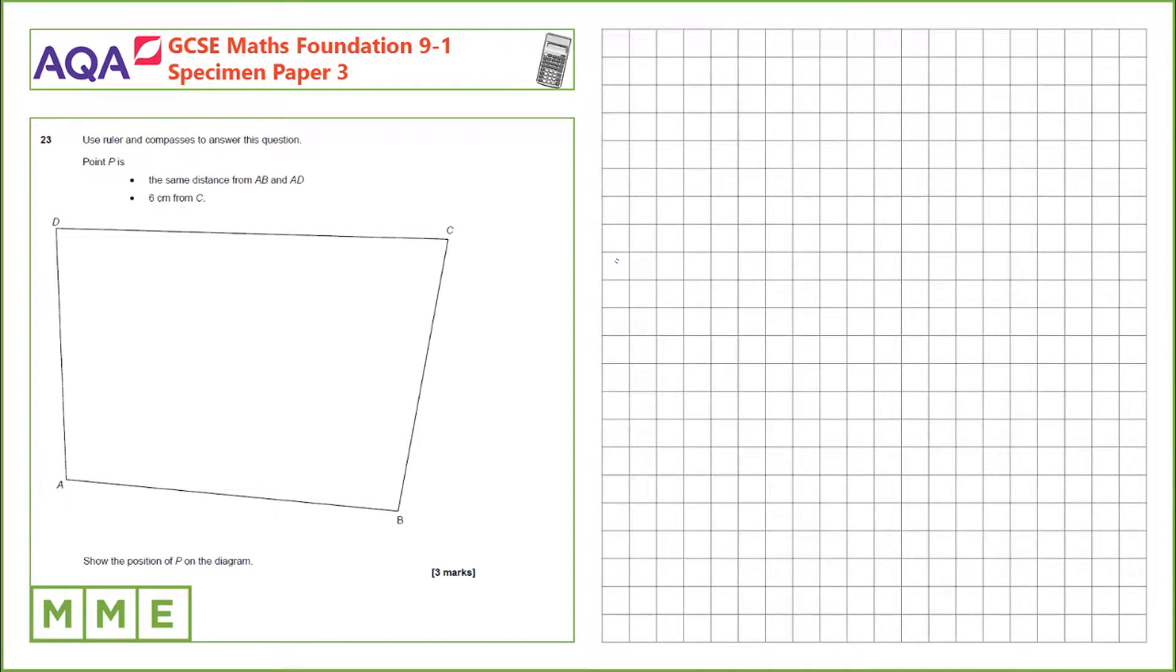Question 23. Use ruler and compasses to answer this question. Point P is the same distance from AB and AD and it's 6cm from C.